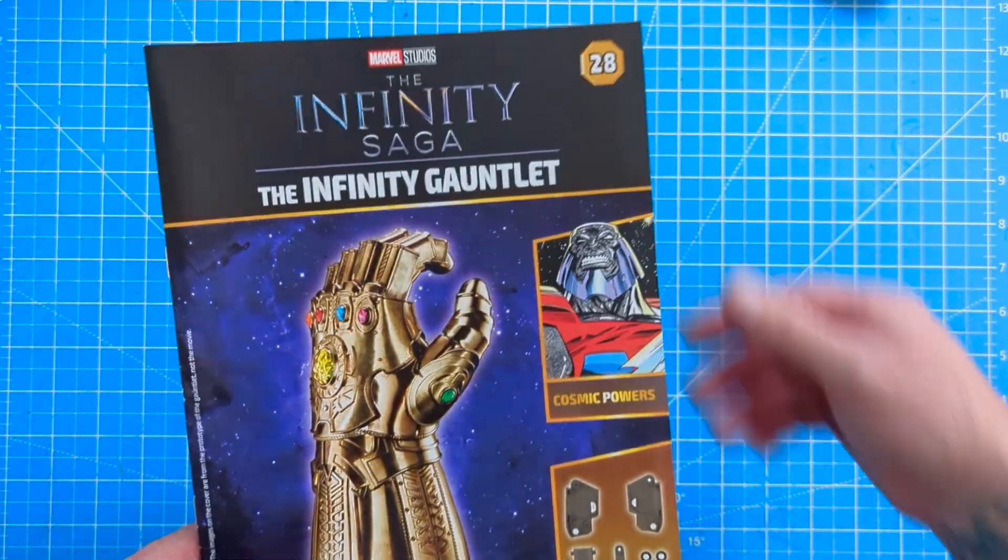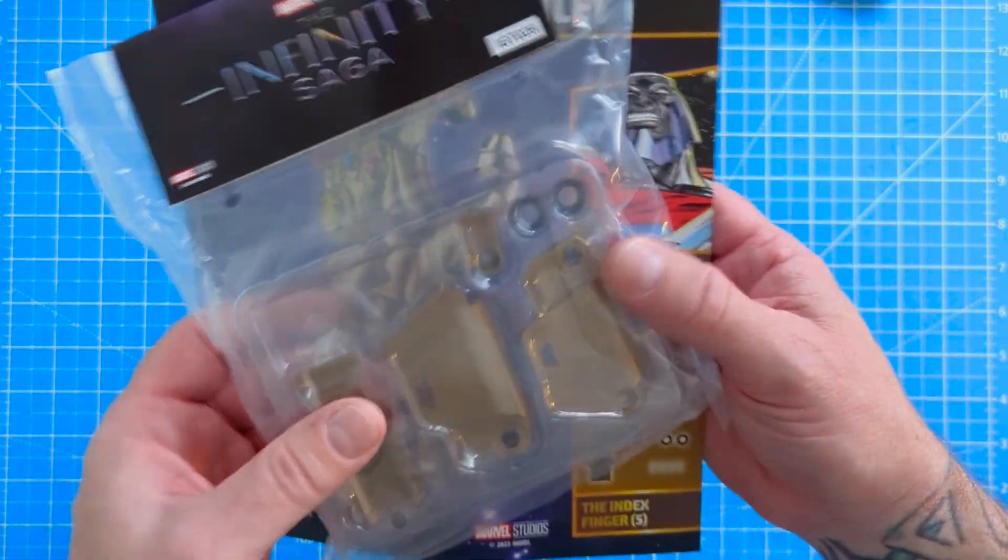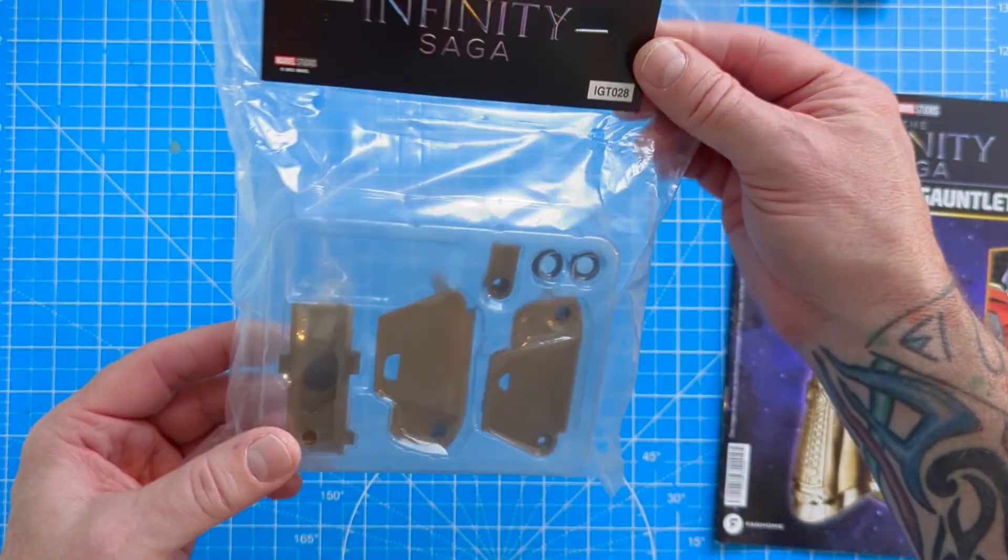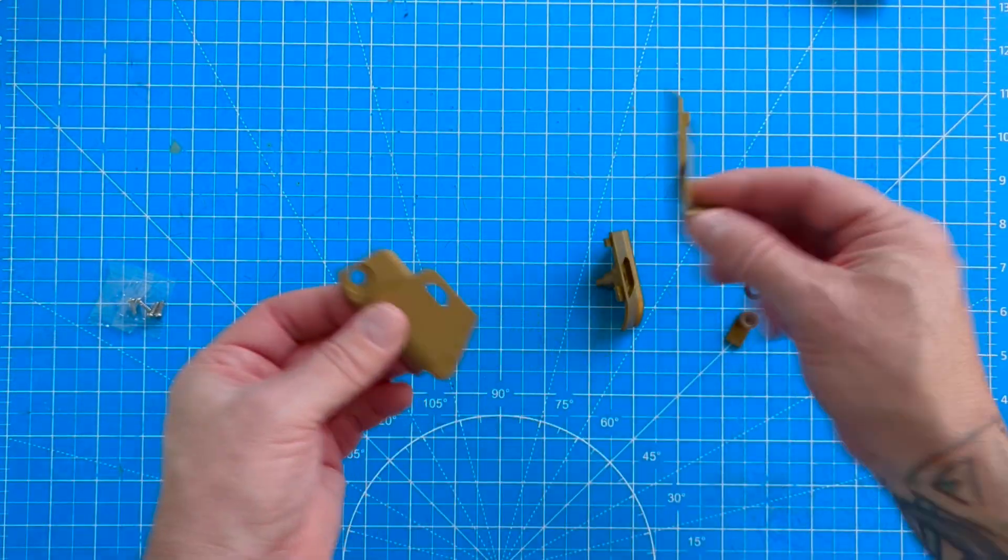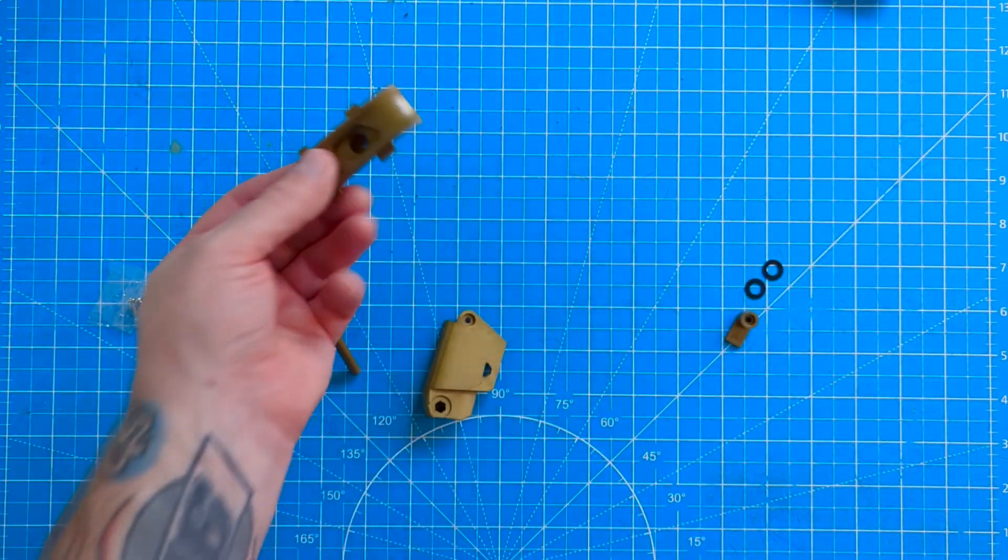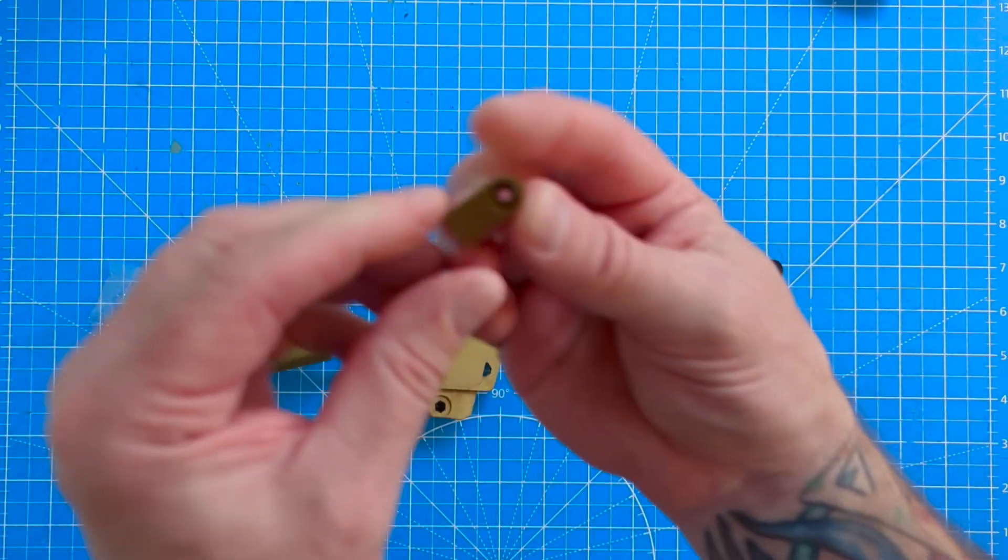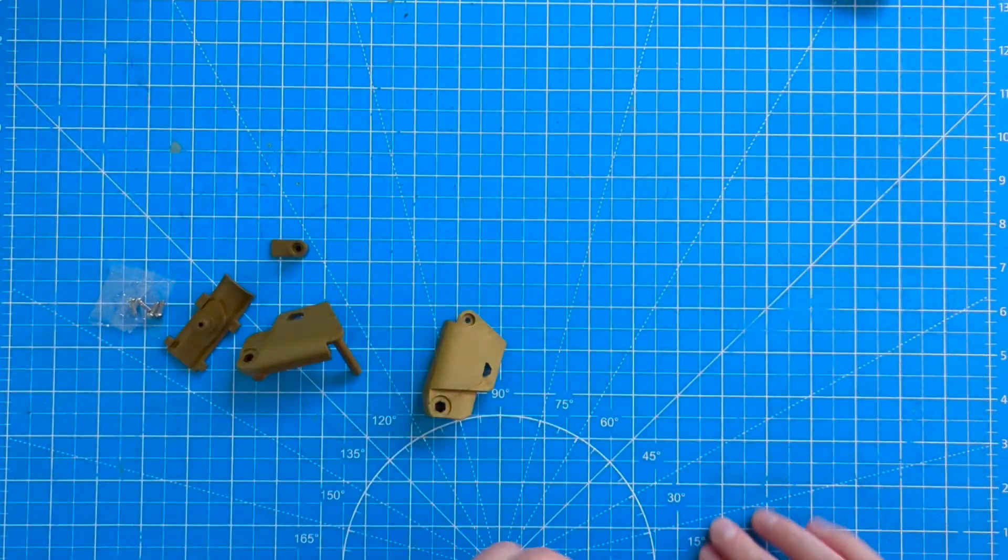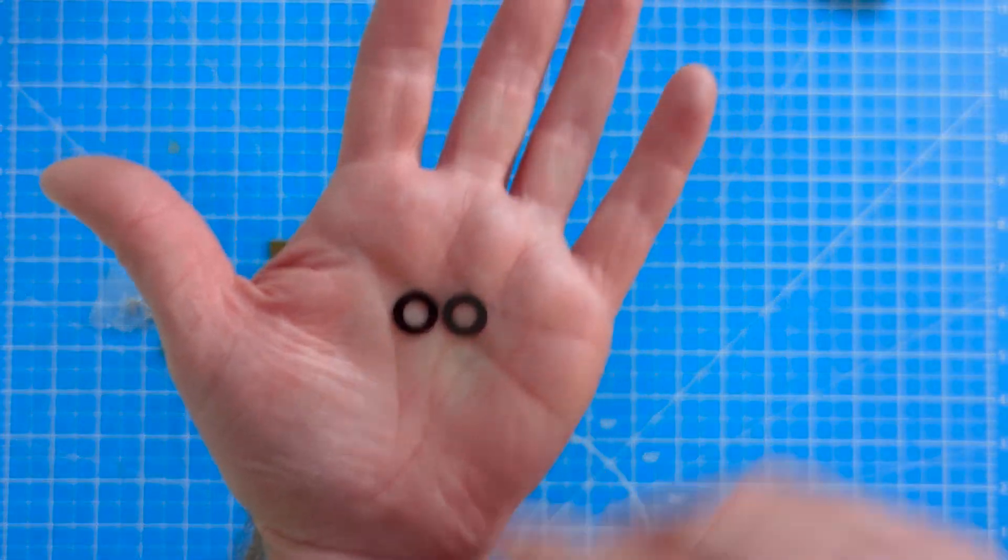Moving on to stage 28. And these are the parts for 28. Let's get these open. We've got some more of the silver screws. A couple of quite large plastic pieces. And this plastic piece, a very small bit there. And we've got another two, don't have trouble picking these up, two more washers.